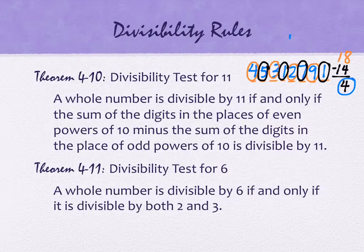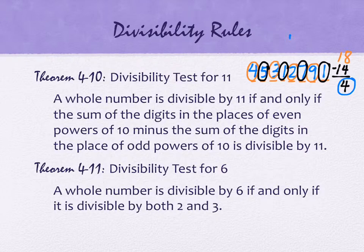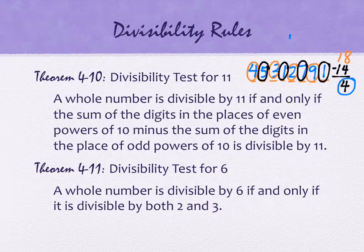The test works when the difference of the two sums is zero, eleven, twenty-two, thirty-three, and so on — that is, when the difference itself is divisible by eleven. If both sums were equal, their difference would be zero, which is divisible by anything. Most numbers are not divisible by eleven because those differences are far apart.